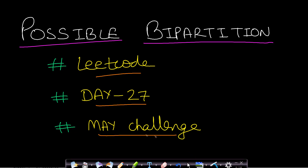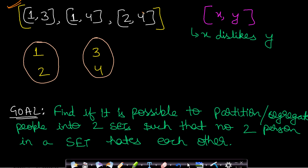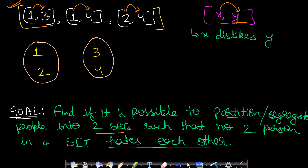Let us look at some examples for a better understanding. We are given this array where each element is a pair (x, y) denoting that x dislikes y. In this case: 1 dislikes 3, 1 dislikes 4, and 2 dislikes 4. Our goal is to find if it is possible to partition people into two sets such that no two persons in a set hate each other. Since 1 hates 3, they should be in different sets. Similarly 1 and 4, and 2 and 4 should be in different sets — and we can successfully divide all incompatible persons into set U and set V.